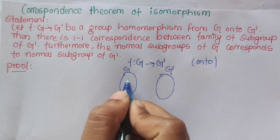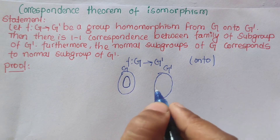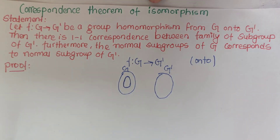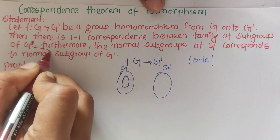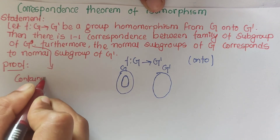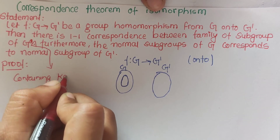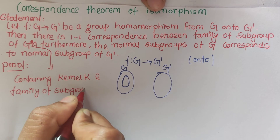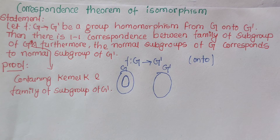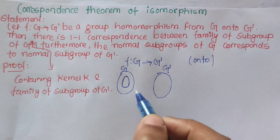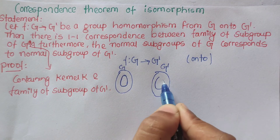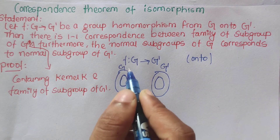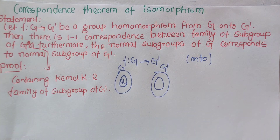There is a 1-to-1 correspondence between the family of subgroups of G' and the family of subgroups of G containing the kernel K. So we need to establish a 1-to-1 correspondence between subgroups of G (containing K) and subgroups of G', using the onto homomorphism relation.